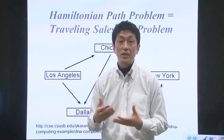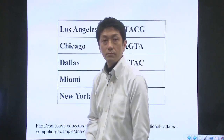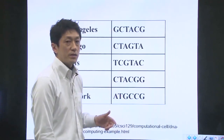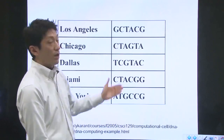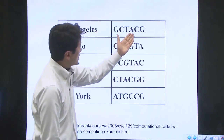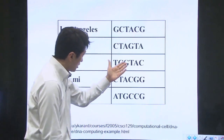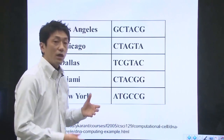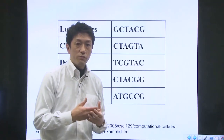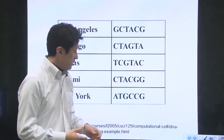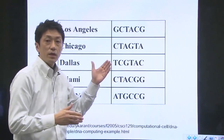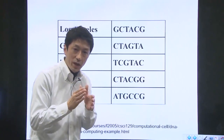How can you solve this problem with DNA? The first thing we need to do is to encode each city by a 6-nucleotide DNA sequence. For example, Los Angeles is GCTACG, and Dallas is TCGTAC. We can encode the flights between cities by using a complementary sequence of the second half of the departure city and the first half of the arrival city.